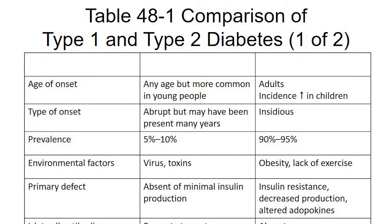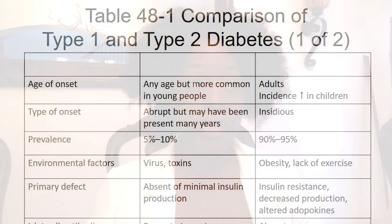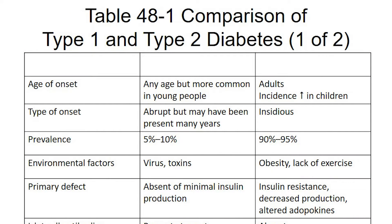Let's talk about the differences between Type 1 and Type 2. Regarding age of onset, Type 1 is more common in juveniles — that's why it used to be called juvenile onset diabetes. Type 2 is seen at later stages in life. The onset of Type 1 is very abrupt.